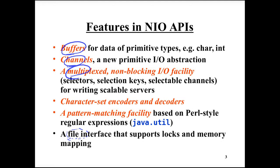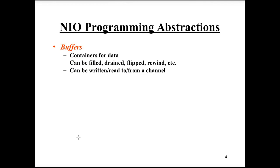The main abstraction of buffers is that they are containers for data. All data transfer is done using buffers — there are no individual bytes as in the stream-based API. There are lots of methods to operate on the buffers, and there are some pointers associated with each buffer. At first it can be difficult to understand the meaning of those pointers and how the methods manipulate them.